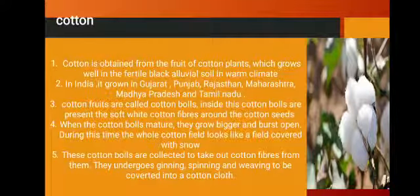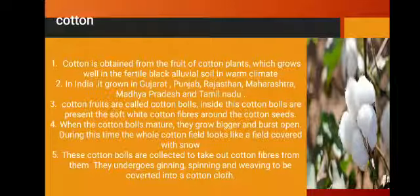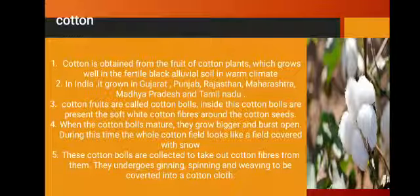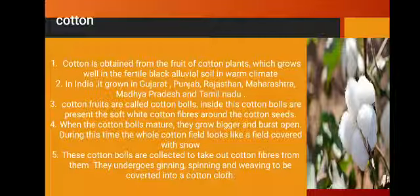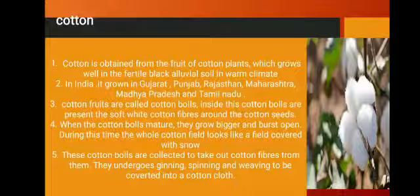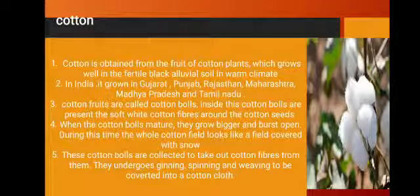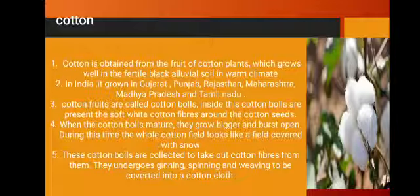Cotton is a plant fiber obtained from the fruit of cotton plants, which grow well in fertile black alluvial soil in a warm climate. In India, it is grown in Gujarat, Punjab, Rajasthan, Maharashtra, Madhya Pradesh, and Tamil Nadu. Cotton fruits are called cotton balls; inside them are soft white cotton fibers around the seeds. When the cotton balls mature, they grow bigger and burst open, making the whole field look like it is covered with snow. These cotton balls are collected, and the fibers undergo ginning, spinning, and weaving to be converted into cotton cloth.